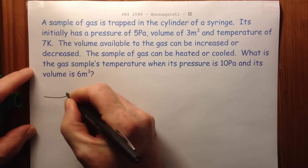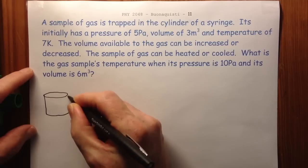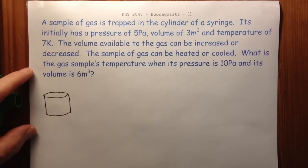So this is an example of comparing the initial and final macroscopic parameters for a trapped volume of gas. We start off by making a list of what we know.